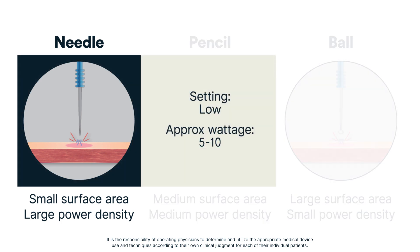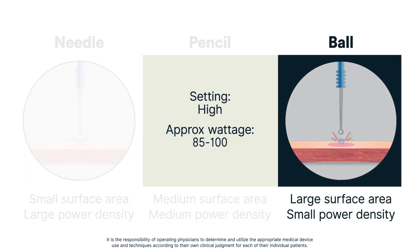If using a needle tip, begin with a low power range — for example, 5 to 10 watts. A ball tip with a larger surface area will require a higher power setting.